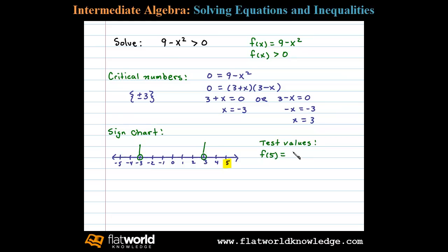Substituting that in, we have 9 minus 5 squared, which equals 9 minus 25, which is going to be negative. In fact, any number you choose in that interval will be negative, and so we'll indicate that with some negative signs above inside that region.